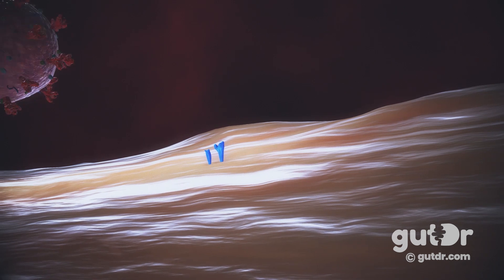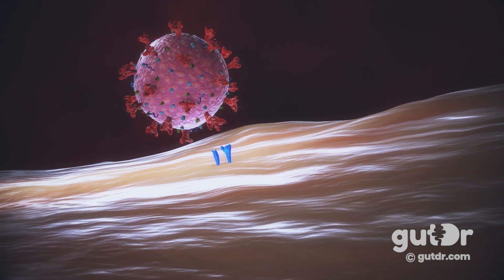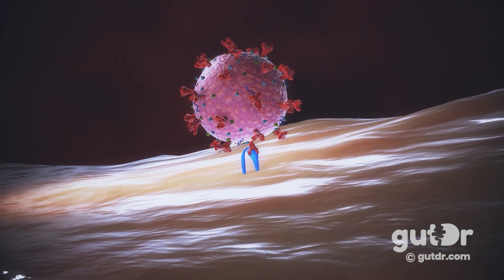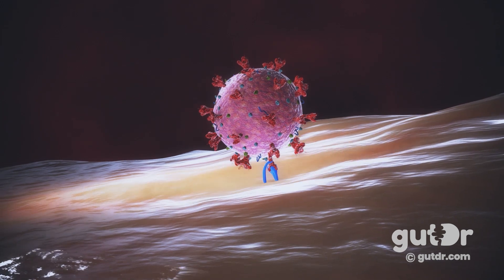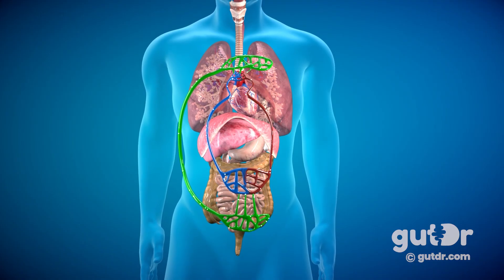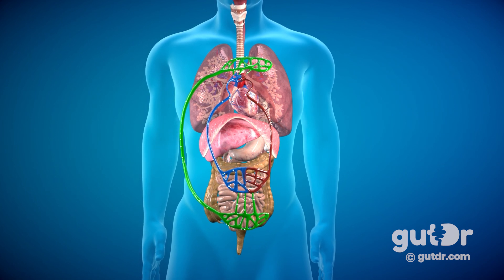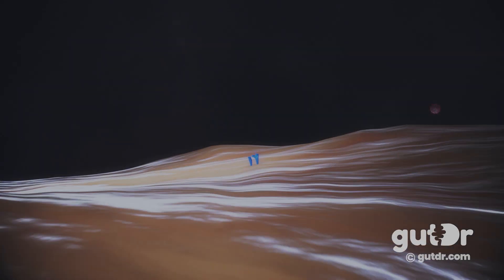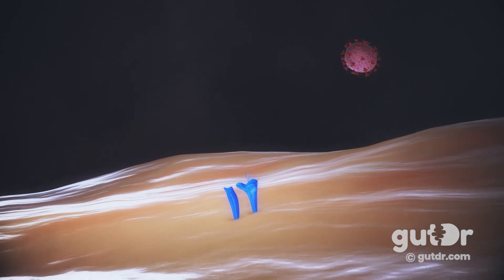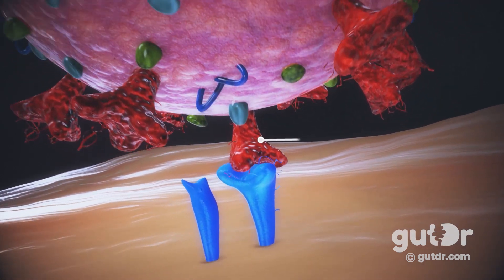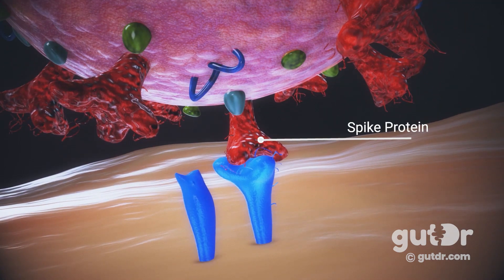SARS-CoV-2 is able to bind directly to intestinal cells and infect them, leading to acute inflammation. In theory, this could happen from ingested coronavirus coming into contact with the gut. But it's more likely that SARS-CoV-2 spreads from the lungs to the gut via mechanisms such as the gut-lung axis, blood circulation, and mesenteric lymph drainage. The virus binds onto cells lining the gut through ACE2 receptors on the cell surface via its spike proteins.